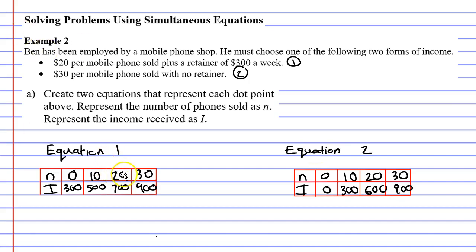We can see already that when you sell 30 mobile phones, you'll get the same amount of money in each case.